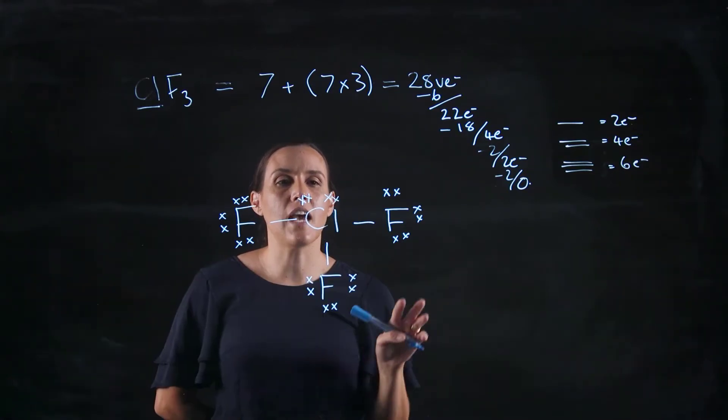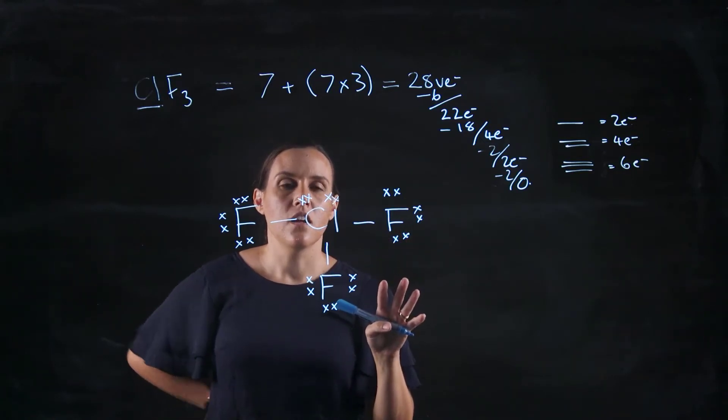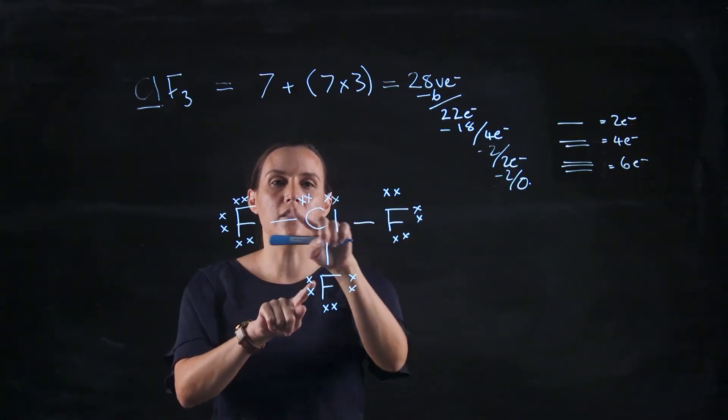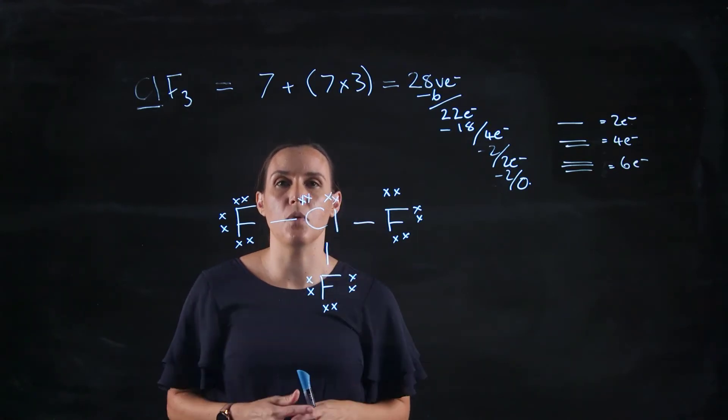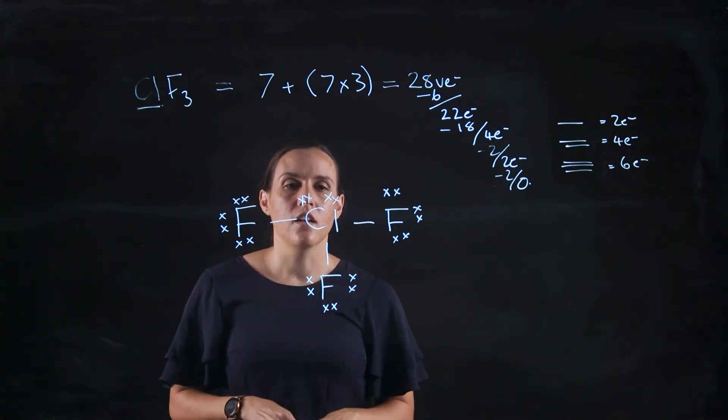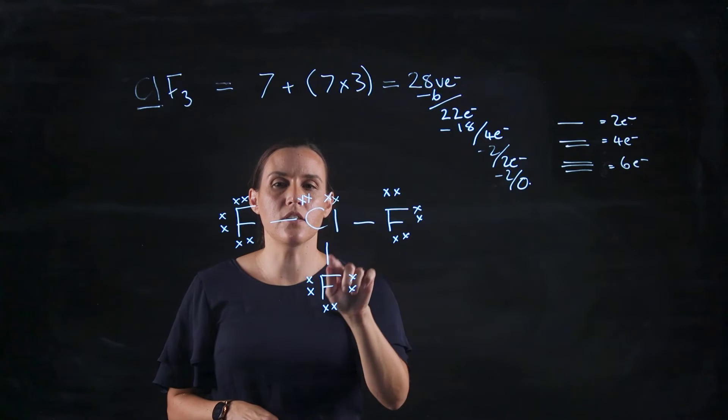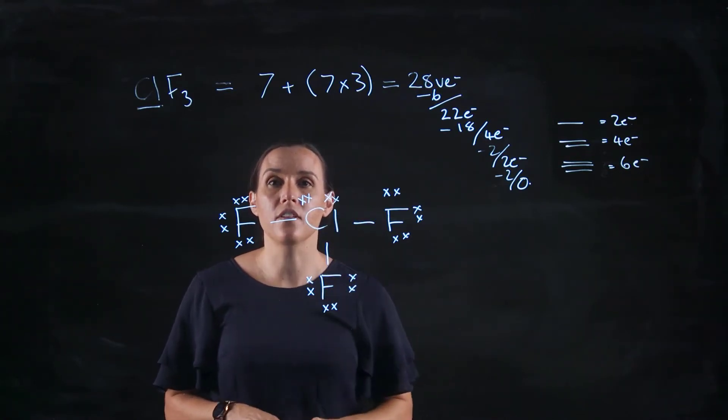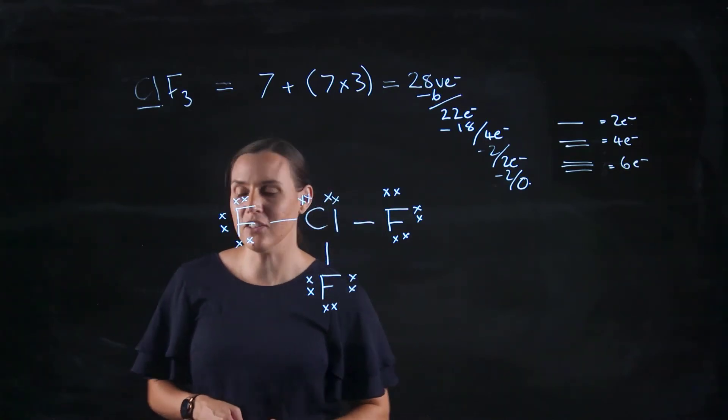Now looking at the shape of this one, so we've got three that are bonding and two lone pairs that will be on that central chlorine. So we've got one, two, three, four, five. So I'll get the model kit out and we'll have a look.